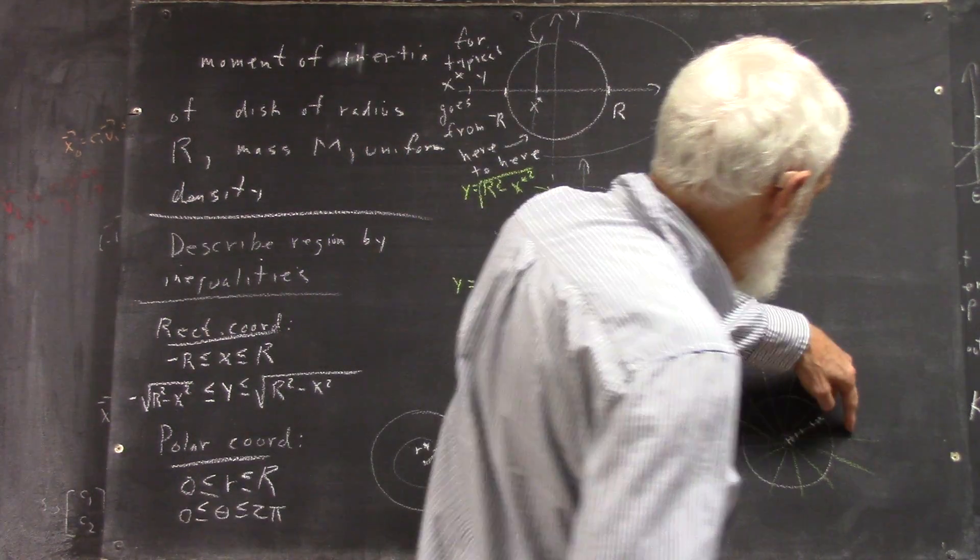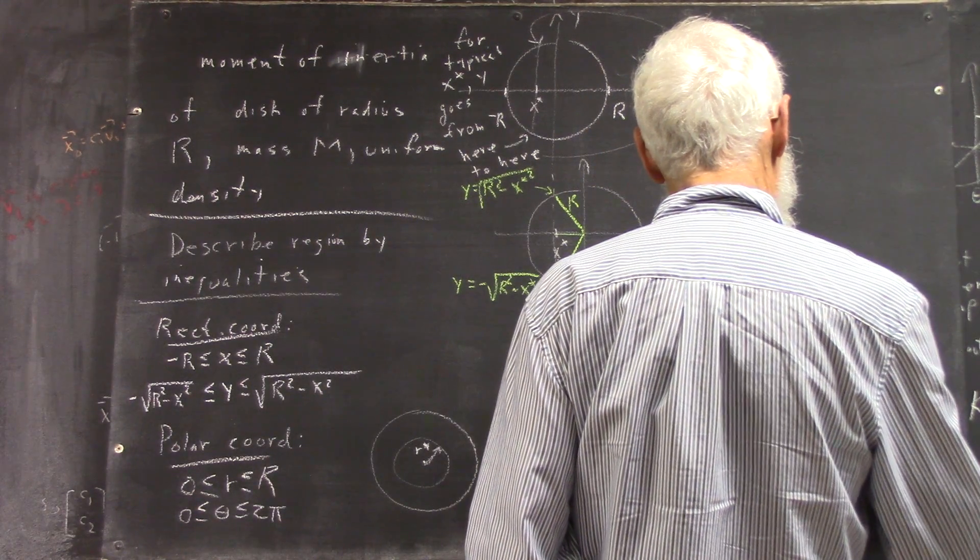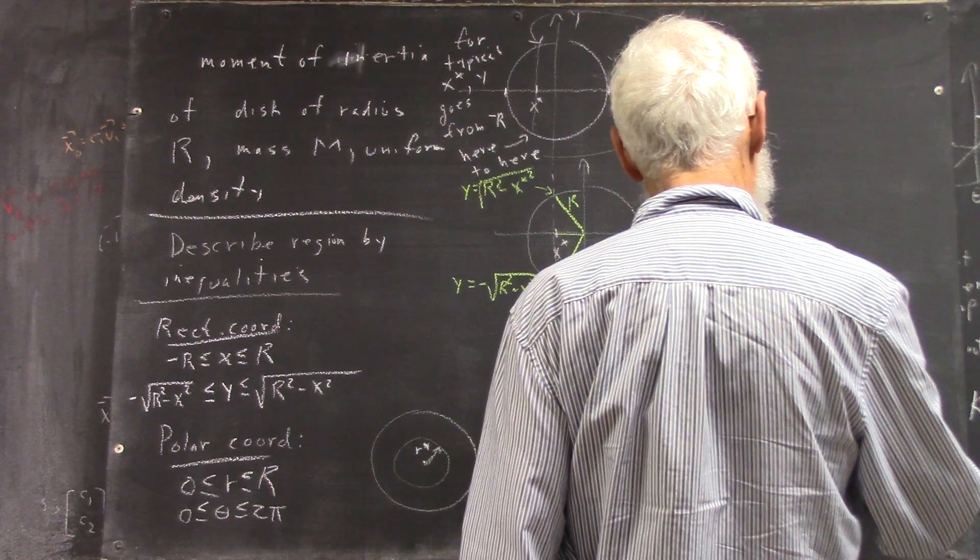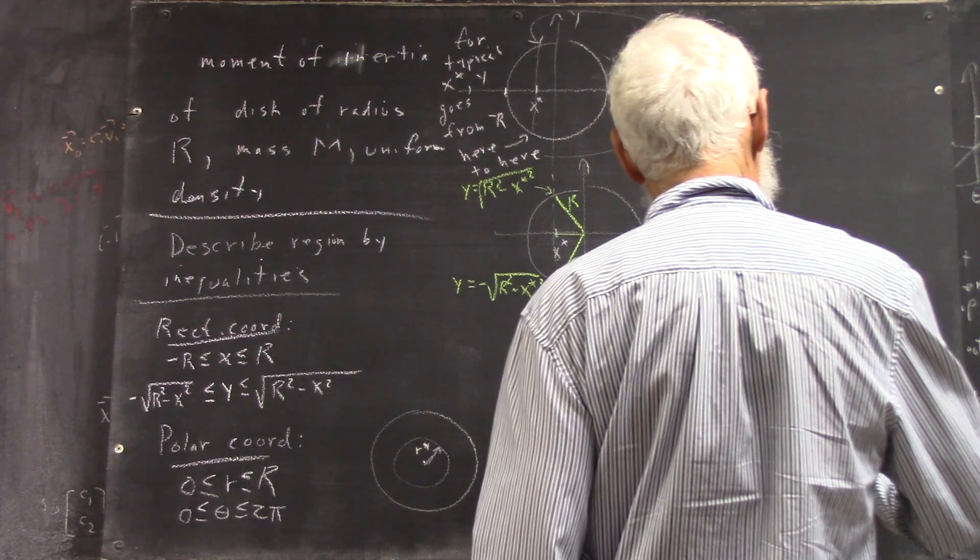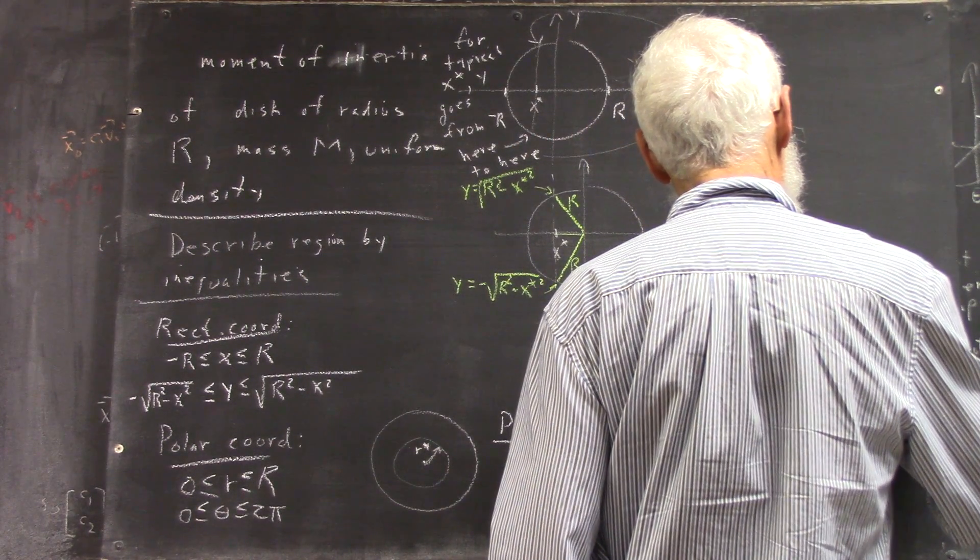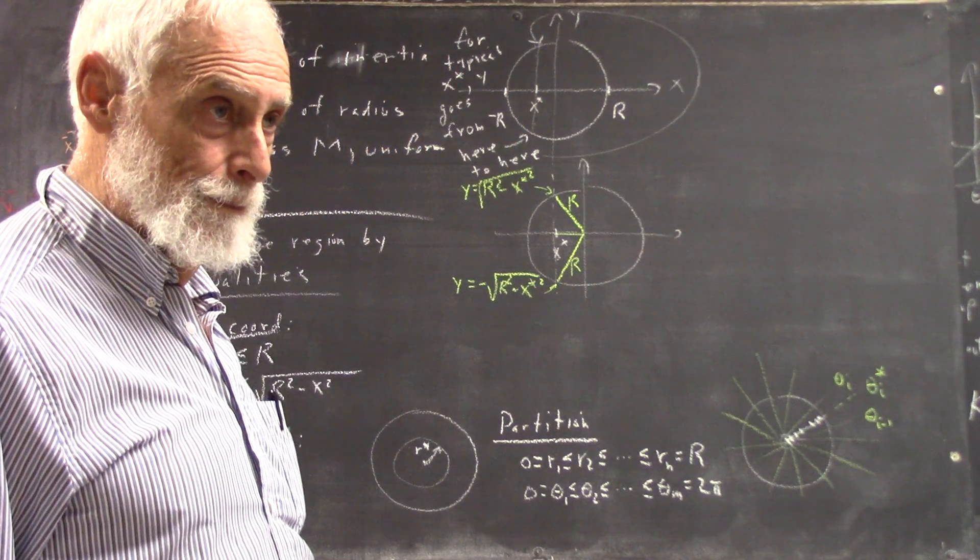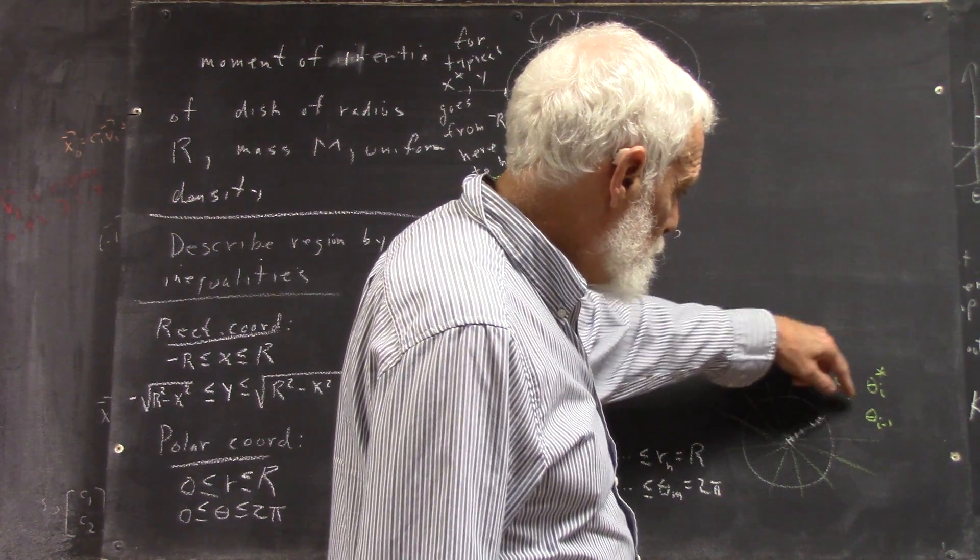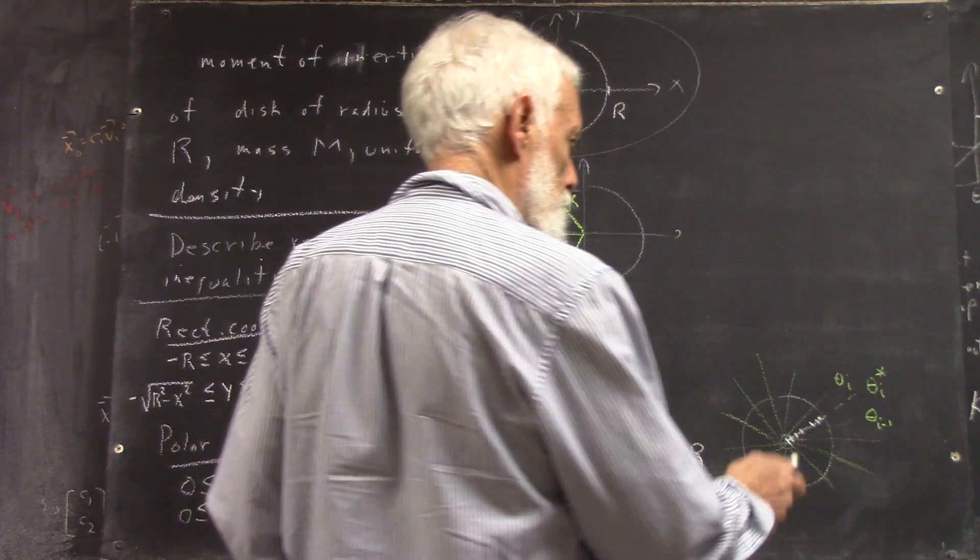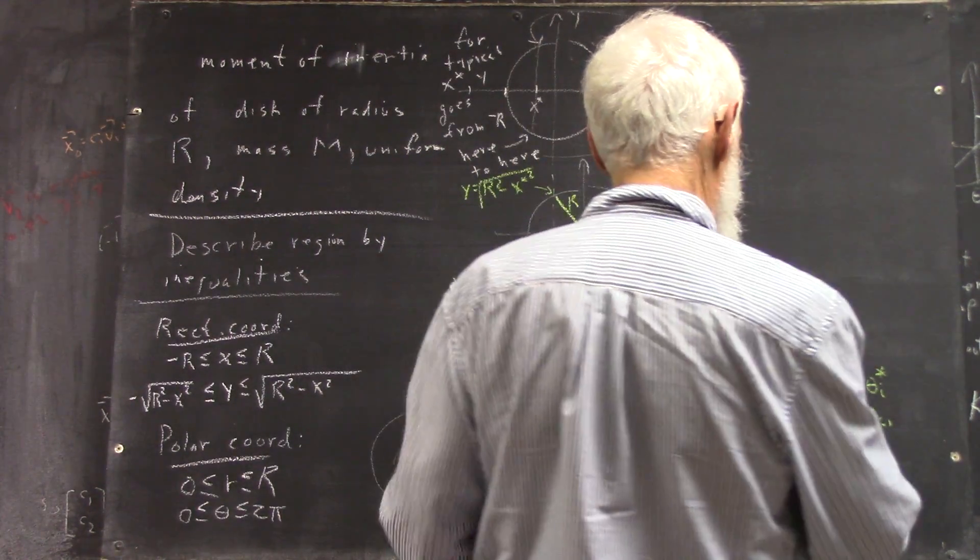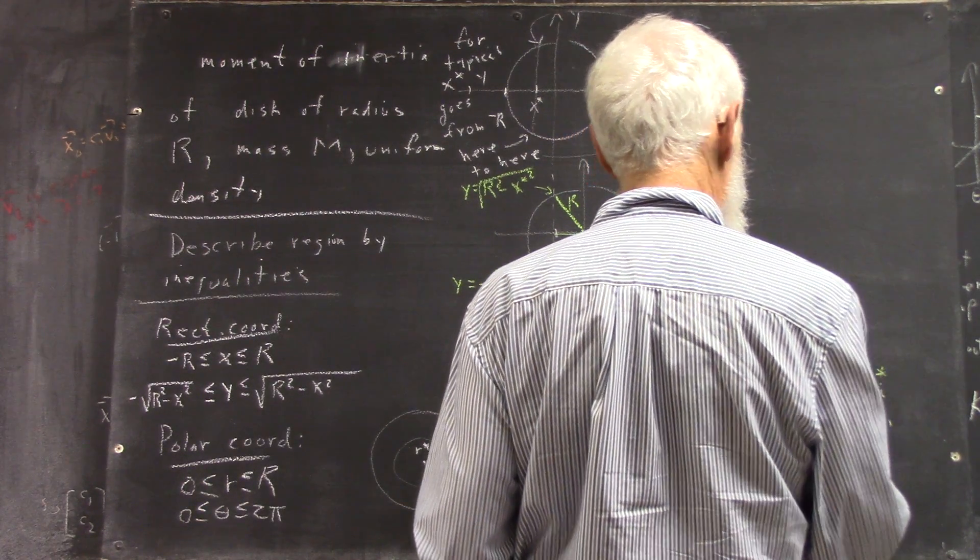Okay, so within this particular theta, we'll say this is theta sub i minus 1 and theta sub i. Okay? We have some theta sub i star. Okay? And I'll put my r partition across theta sub i star, although I don't really have to. And the r, okay, I'm going to call this here r sub i minus 1.